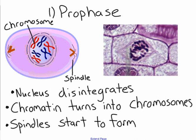Prophase is the first step of mitosis. The things that happen in prophase are: the nucleus disintegrates — in order for the cell to divide, we can't have a nucleus. Next, the sloppy, unorganized chromatin is going to turn into organized chromosomes, and you can see that in the picture with the nice X shapes. Finally, the spindles start to form.